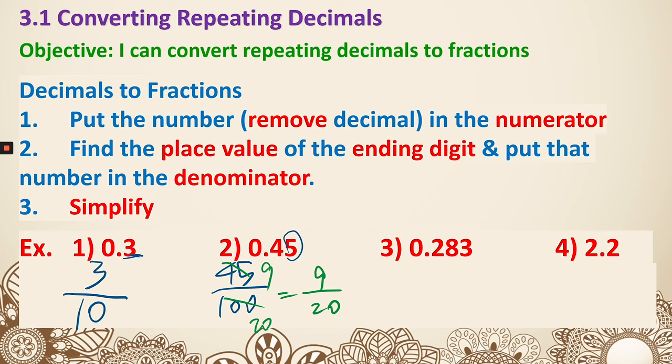Next, 0.283. That is the thousandths place, so we put 1000 on the bottom. That cannot be simplified, so that is it. Last one, remove the decimal point, we get 22. Since this is the tenths place, we put it over 10. Both the top and bottom are even, divided by 2. We get 11 and 5, so final answer 11 over 5.